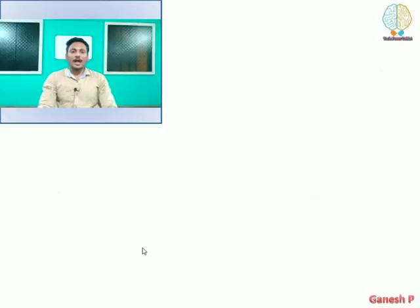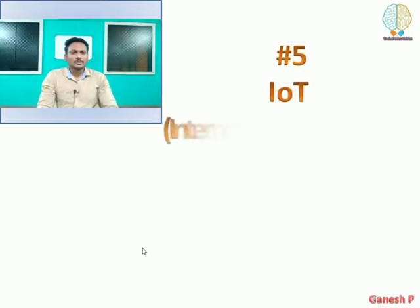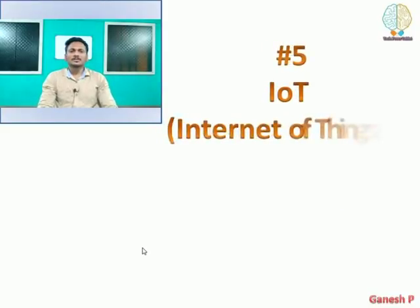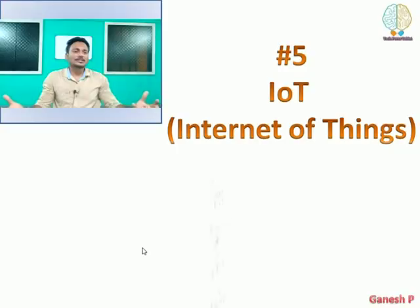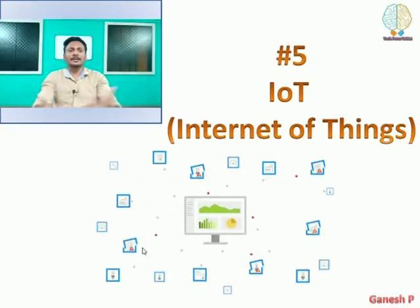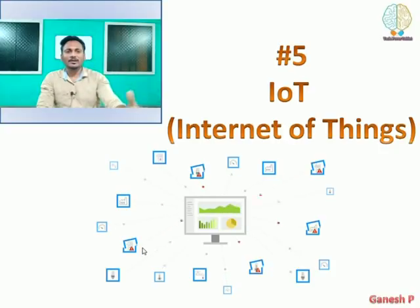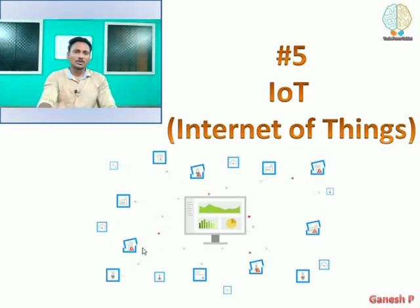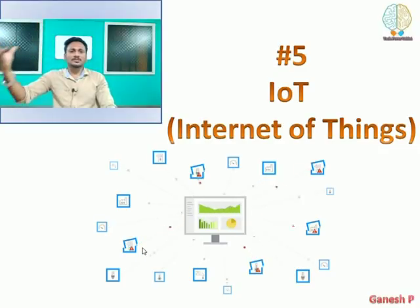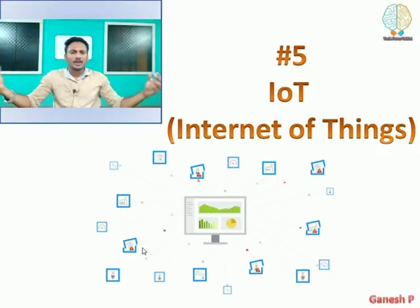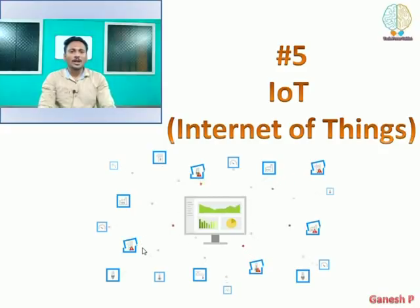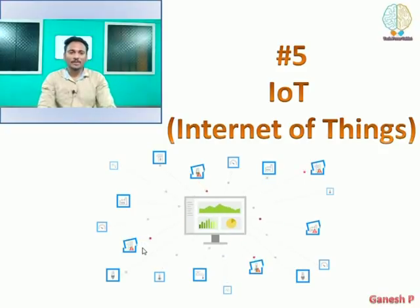The fifth technology is IoT — Internet of Things. What is IoT? Very simple: if we use our gadgets like laptops and mobiles connected to the internet, I can communicate with you from anywhere at any time. If you have devices like lights, fans, fridge all connected to the internet, that's your IoT.